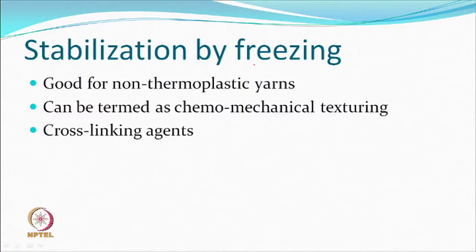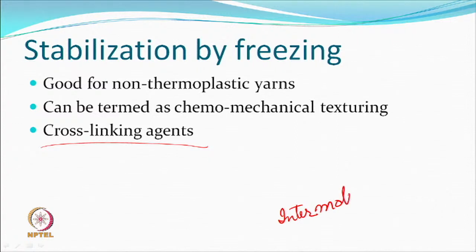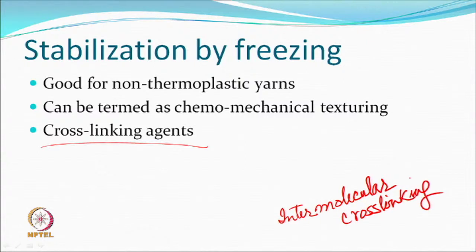Another thing that can be done for non-thermoplastic materials is stabilization by freezing - not by release of energy. For example, you can use a cross-linking agent for intermolecular cross-linking. For cellulose, DMDHEU is used as a bifunctional cross-linking agent; trifunctional or hexafunctional cross-linking agents can also be used.